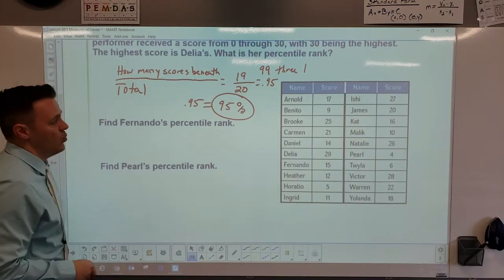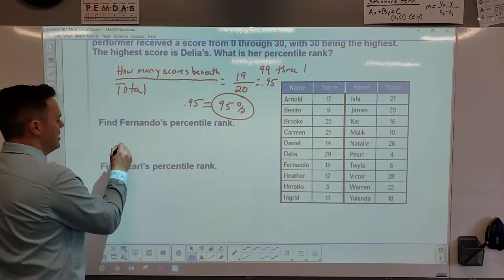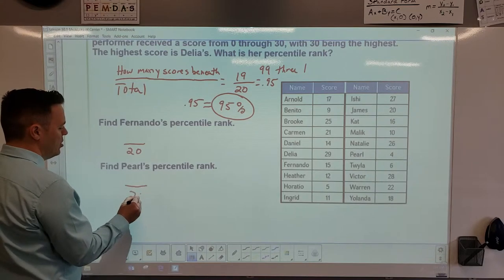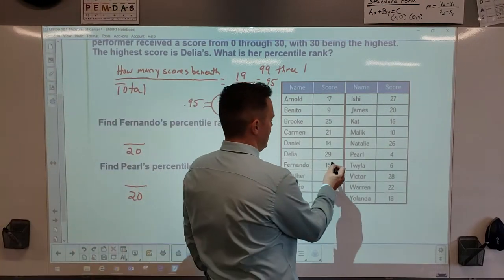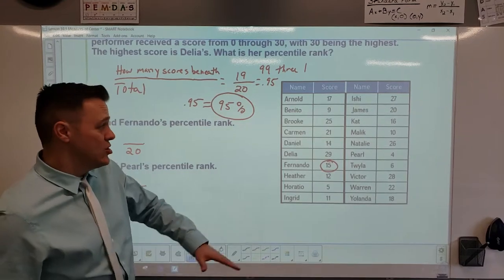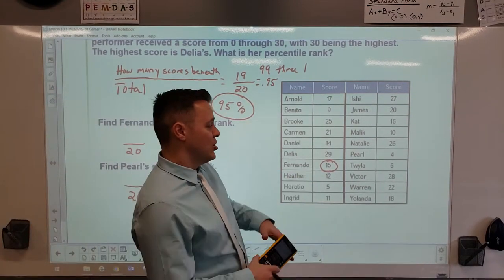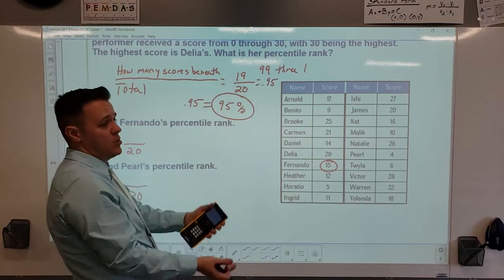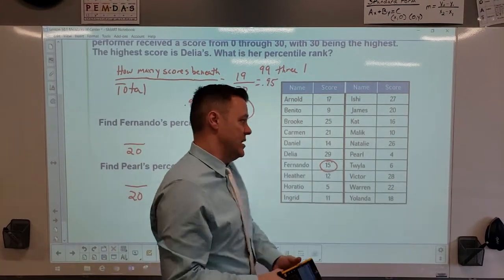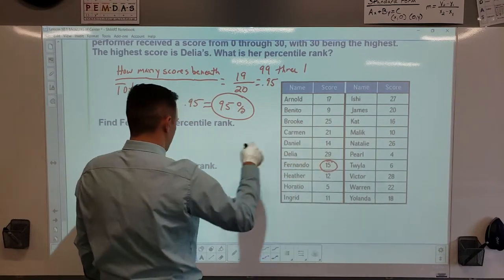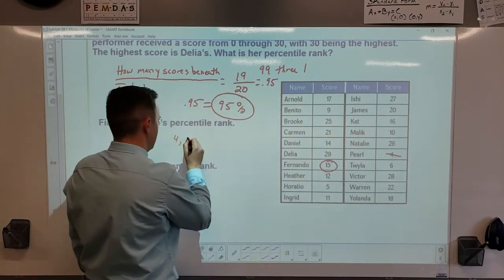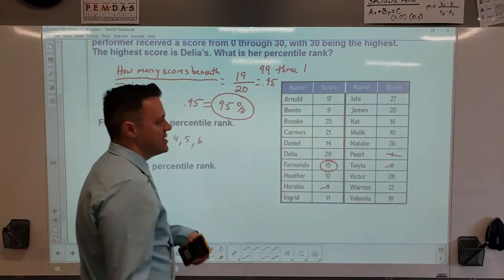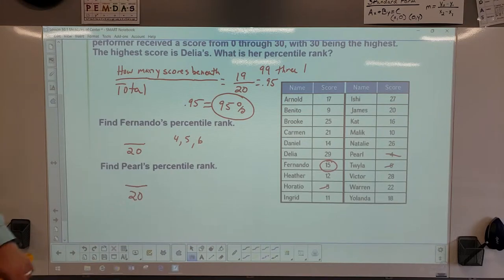For Fernando, who is ranked 15th out of 20, you need to count all scores below his. I recommend starting from the bottom and working your way up. Start with the lowest: 4, then 5, 6, 9, 10, 11, 12, 14 — stop when you reach Fernando's score of 15. Also go ahead and figure out Pearl's percentile on your own.